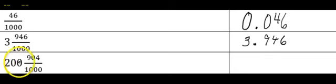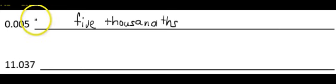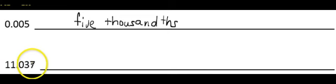Now I have two hundred and nine hundred four thousandths. My whole number goes before the decimal point, and nine hundred four thousandths lands in the thousandths spot. To express a decimal in word form, I just look at the number and read it, but the last word I say is the place value where it lands. So I would read this number as five thousandths. Here, I have the number eleven — the decimal point is where I say 'and' — so it's eleven and thirty-seven thousandths.